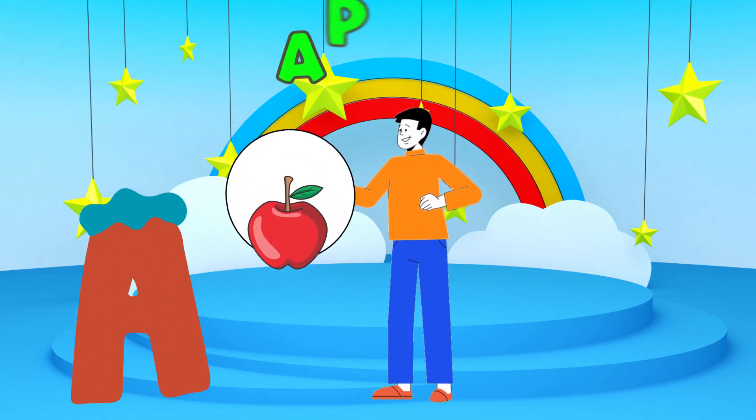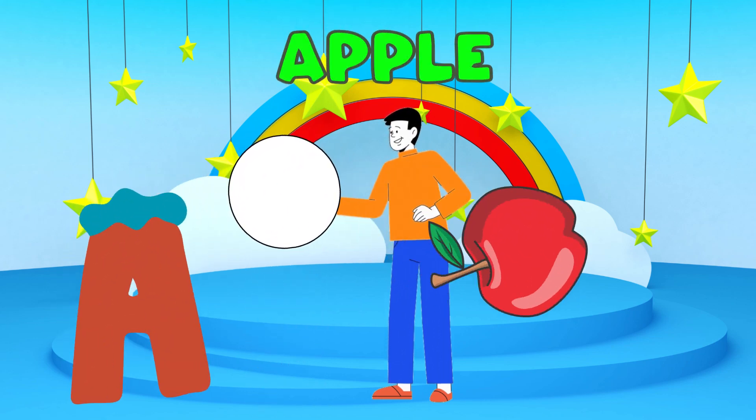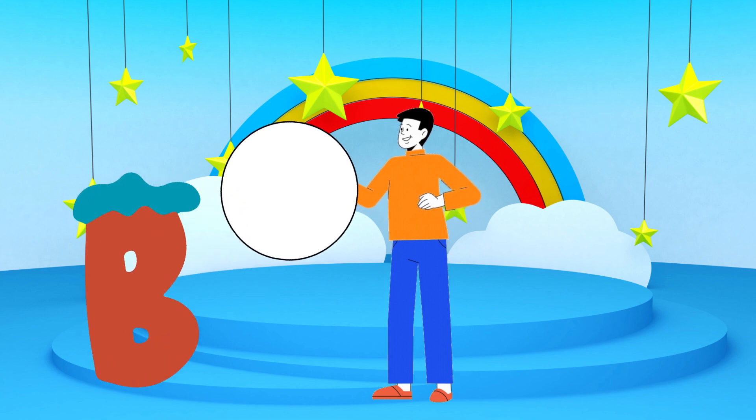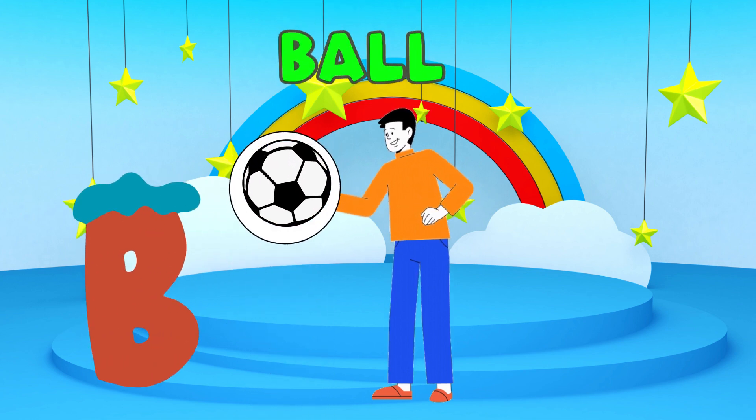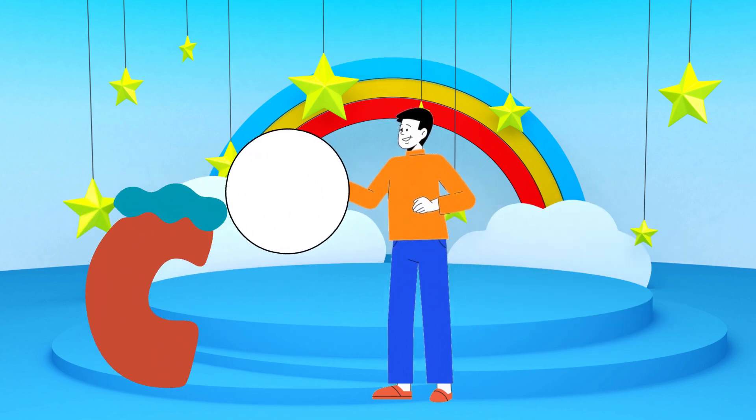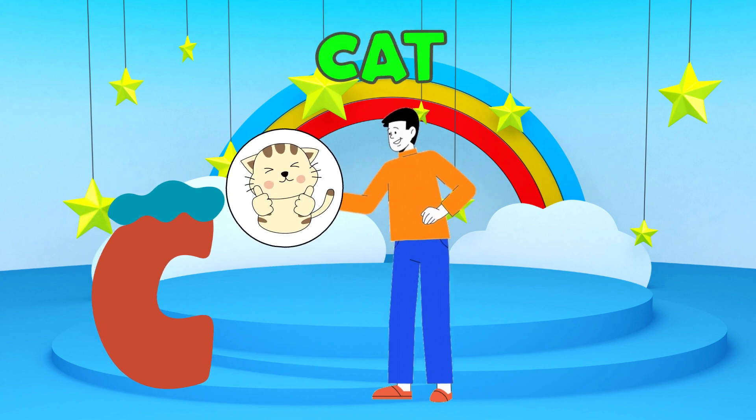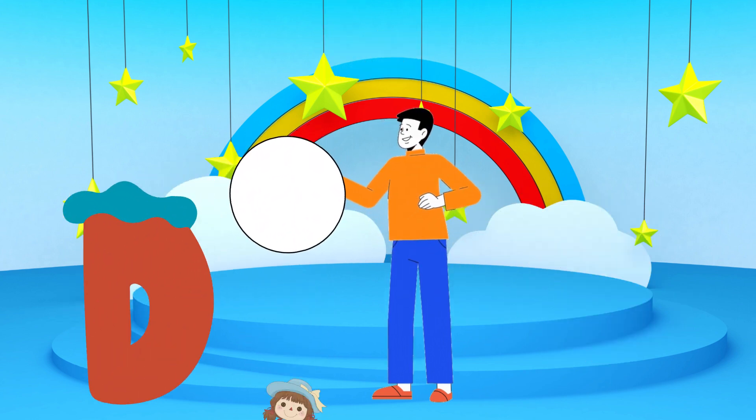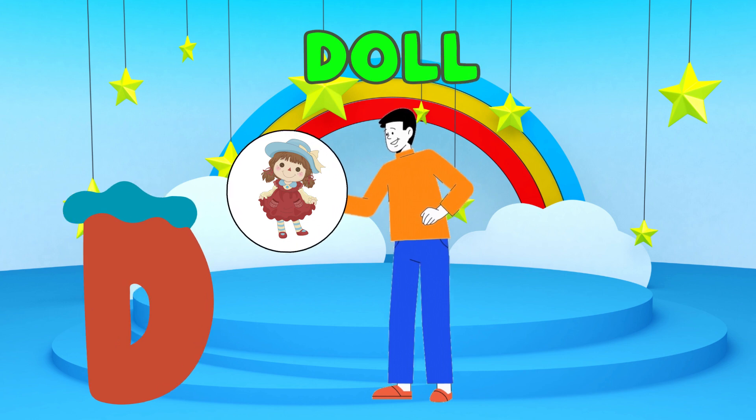A is for apple, a-a-apple. B is for ball, b-b-ball. C is for cat, c-c-cat. D is for doll, d-d-doll.